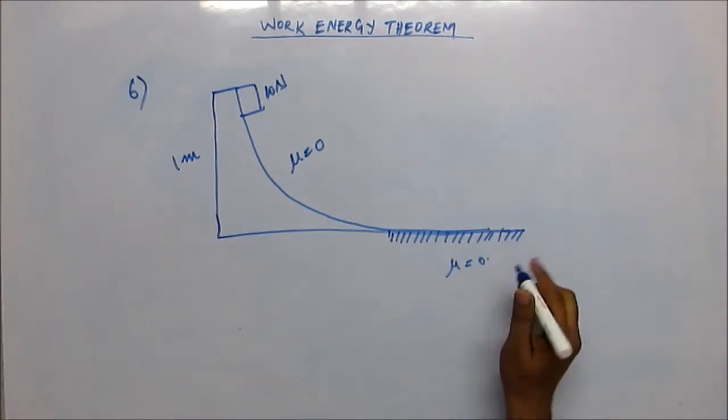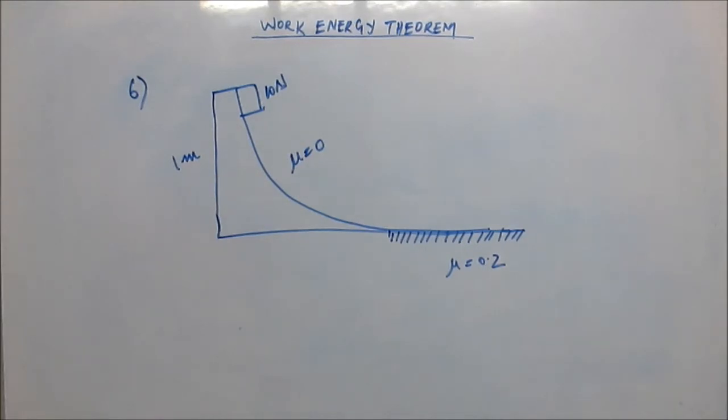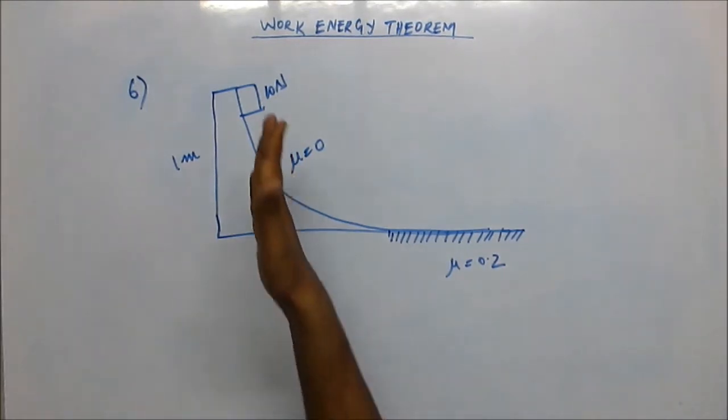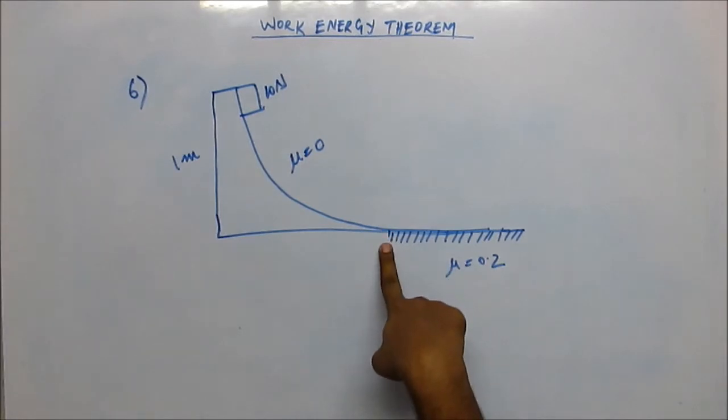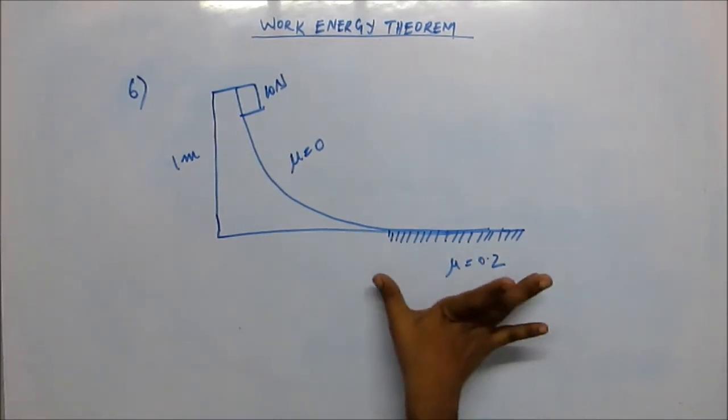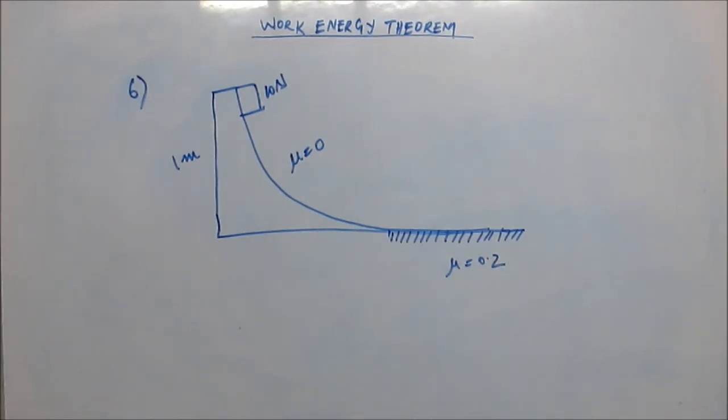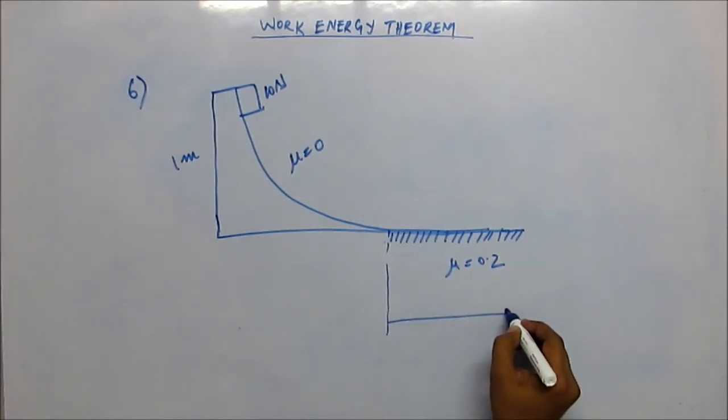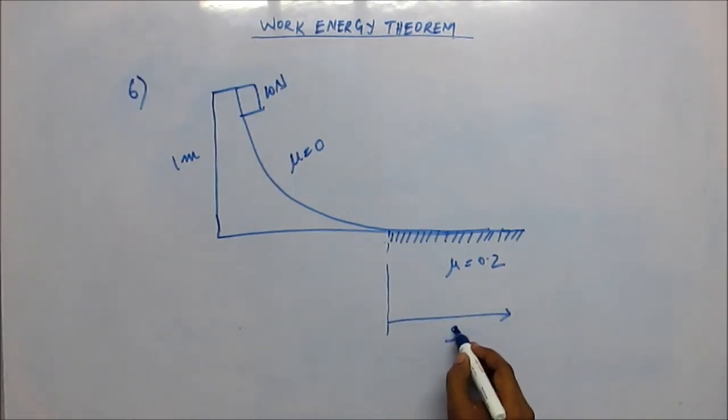The question is to find: when the block comes down, it will come here without loss of any energy. When it starts to move into the region of friction, there would be some energy loss due to friction. So what will be the maximum distance that the block will travel in the region of friction and stop?